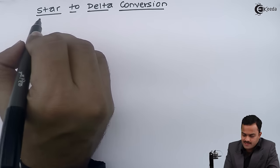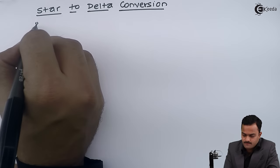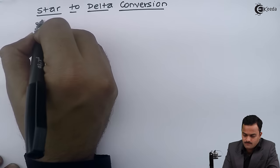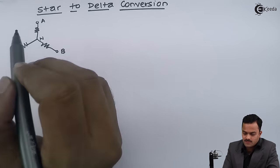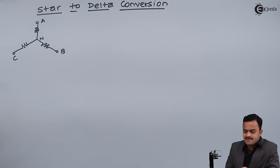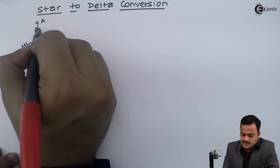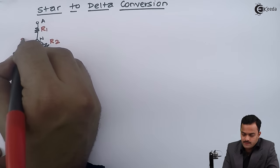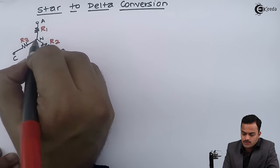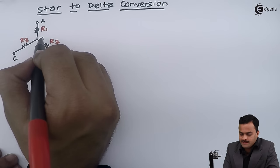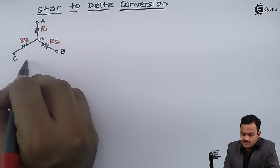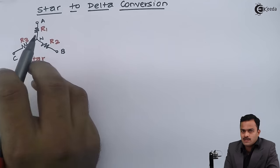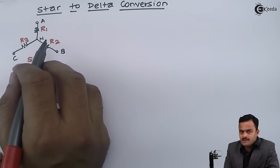Let's consider a simple star network. The concept of star is that one end of each resistor R1, R2, R3 is connected together to form a neutral point N. This particular network is star.